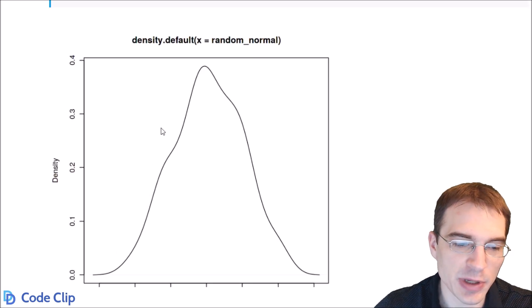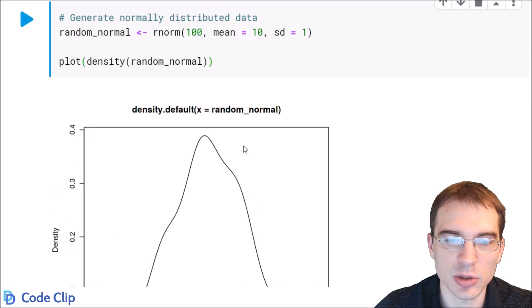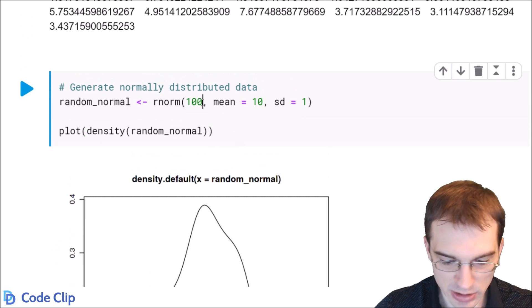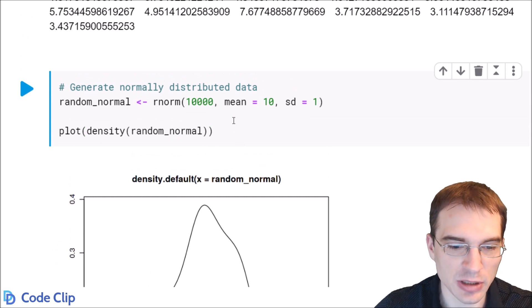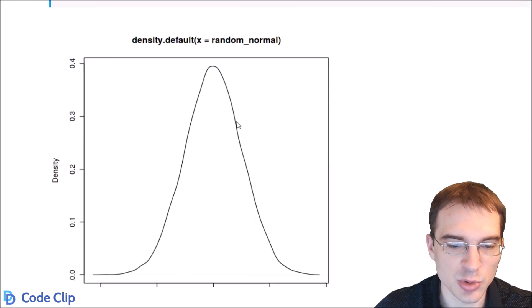It's not a super nice bell curve here because this was constructed from 100 random values. So if we wanted a smoother bell curve we would have to generate more values to approximate the normal distribution more closely. So let's say we generated 10,000 here we're going to probably get a much smoother distribution.